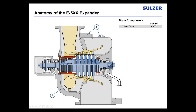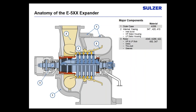Before going further, we need to cover some nomenclature so we're all on the same page. Starting with the outer case — I'm listing the materials that these parts are commonly made out of. The case is unique in that it has a horizontal split line, but the top half also contains a vertical split line. That's a little unusual, but it's necessary for disassembly of this machine.